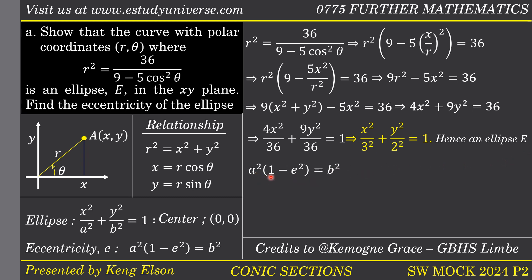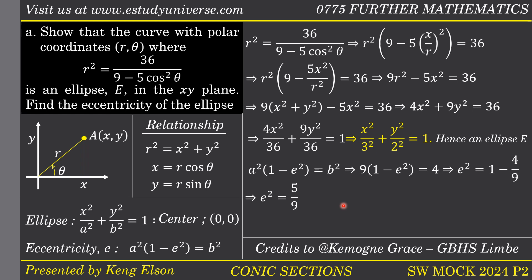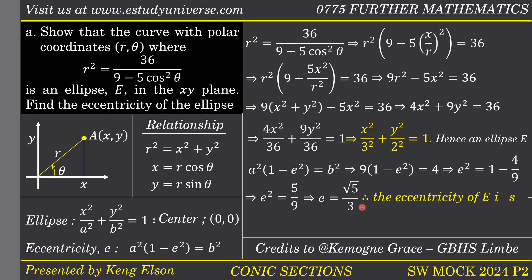From here we can easily find the eccentricity using the formula a squared times (1 minus e squared) equals b squared. We have a squared equals 9 and b squared equals 4, so 9 times (1 minus e squared) equals 4. Solving, e squared equals 1 minus 4/9 equals 5/9. Taking the positive square root (since eccentricity is positive), the eccentricity of the ellipse is root 5 divided by 3.